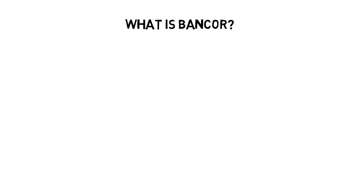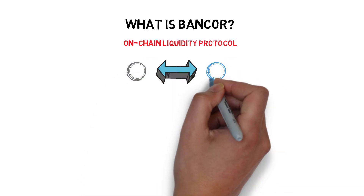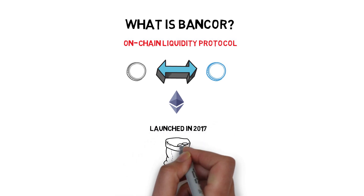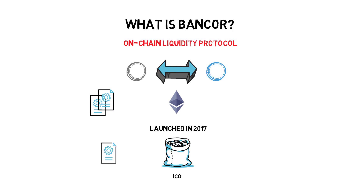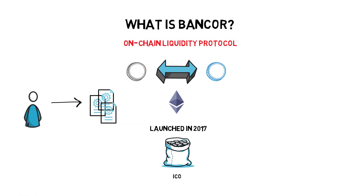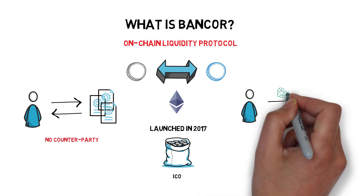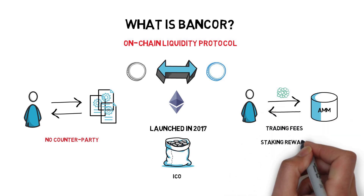Bancor is an on-chain liquidity protocol that enables automated, decentralized token exchange on Ethereum and across blockchains. Launched in 2017 with one of the biggest ICOs in the space, the protocol is made up of a series of smart contracts designed to pool liquidity and perform peer-to-contract trades in a single transaction with no counterparty. Users add liquidity to automated market makers in exchange for trading fees, staking rewards, and future voting rights in the Bancor DAO.